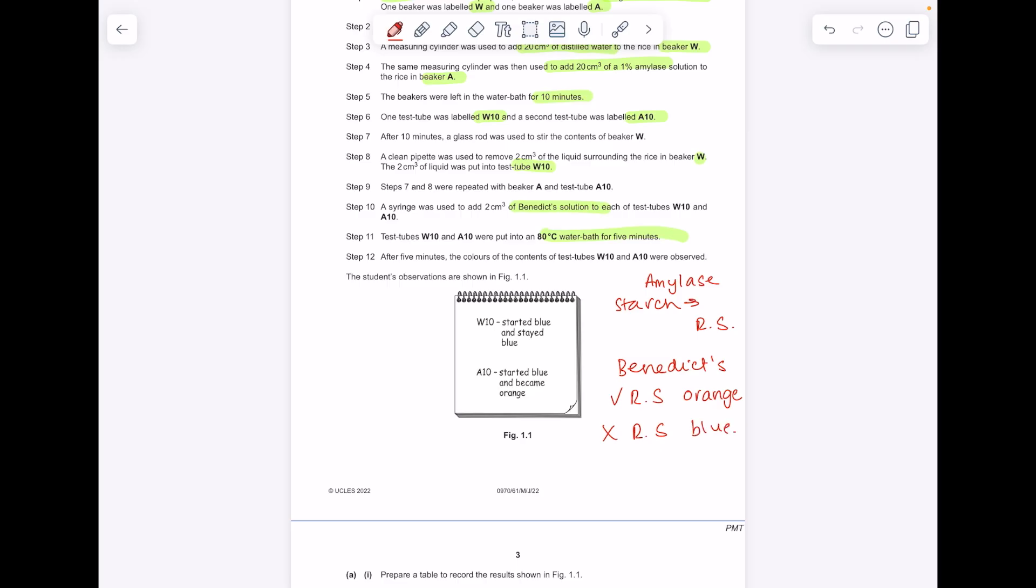W10, it says it stayed blue, which means that there's no reducing sugars. Why is that? Because they only added water. There was no amylase added. Whereas A10 started blue and became orange, which means we do have reducing sugars due to the presence of that amylase breaking down that starch into reducing sugars.